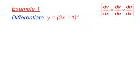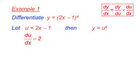Let's differentiate this function: y equals (2x minus 1) all to the power of 4. So we let u equals 2x minus 1, then y equals u to the power of 4. Differentiating, du/dx equals 2, dy/du equals 4u cubed.